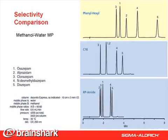A switch to a water-methanol mobile phase has a dramatic effect on retention for the Ascentis Express phenyl hexyl column. In water-methanol, the phenyl group interacts much more strongly than the other phases with the solute heterocyclic ring system, presumably by a pi-pi mechanism. Elution order for the polar compounds also changes from that of water-acetonitrile. For this test sample, Ascentis Express phenyl hexyl selectivity is clearly superior in water-methanol to the other phases tested.